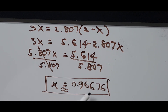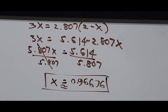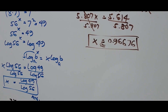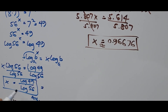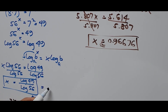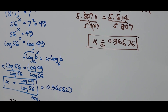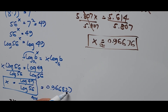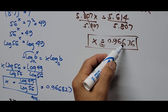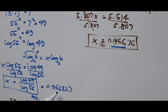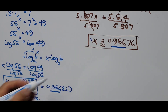Looking at Method 1: using a calculator for log of 49 divided by log of 56 gives 0.966827. Comparing the two results — 0.966827 versus 0.96676 — they are accurate up to three decimal places.